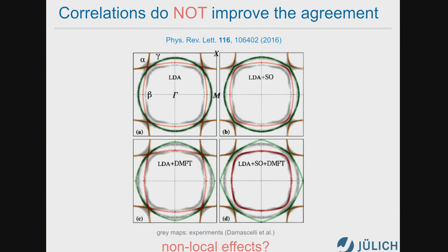You see the LDA Fermi surface and the LDA plus spin-orbit Fermi surface. As expected, the degeneracy problem is solved because spin-orbit now splits degenerate bands, so adding spin-orbit improves the agreement. However, if we add correlation — comparing LDA, LDA+DMFT, LDA+spin-orbit, and LDA+spin-orbit+DMFT — the agreement doesn't really improve. It improves on some sheets but gets worse for some other Fermi surface sheets. So the surprising result of a very tough calculation was that correlations do not improve the agreement in any remarkable way.